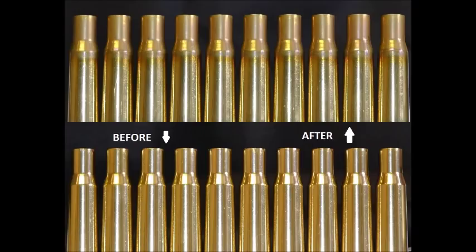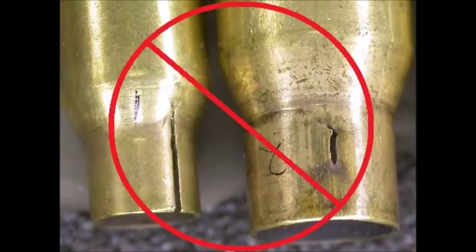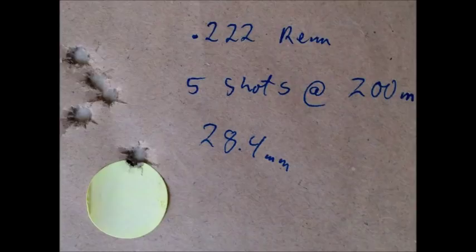Annealing is a process where metal is heat treated to lower hardness and reduce stresses. When applied to brass cartridge cases, annealing will help reduce the stresses that lead to neck cracking, increasing case life. Annealing can also improve uniformity of case neck tension, leading to better accuracy.